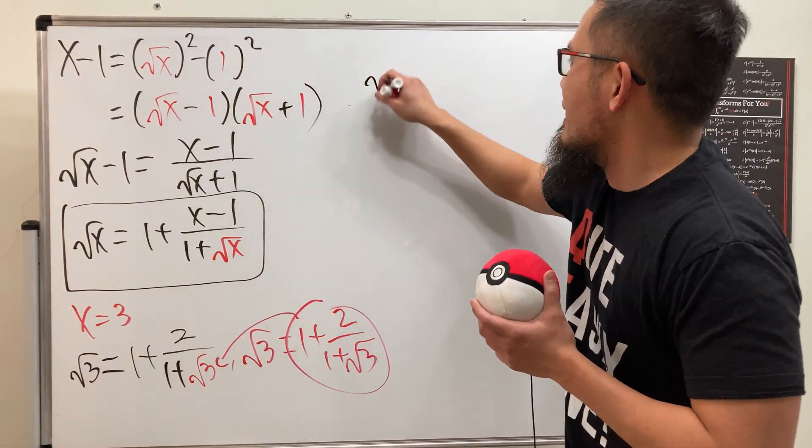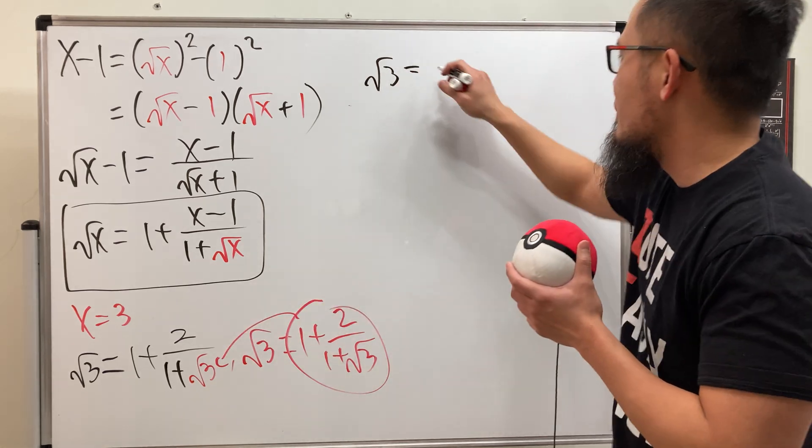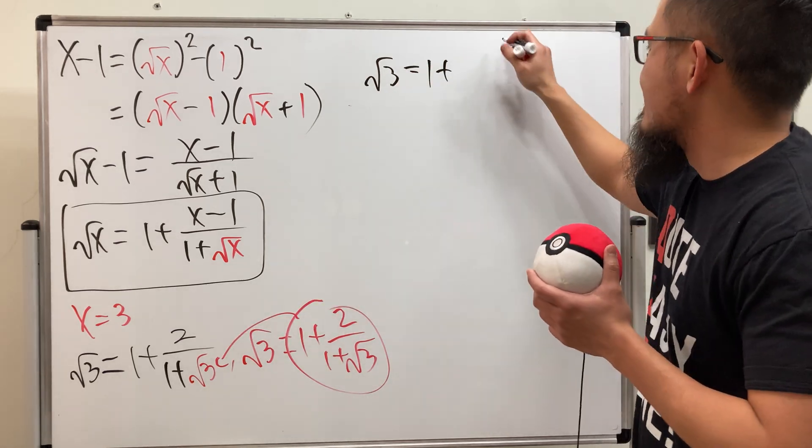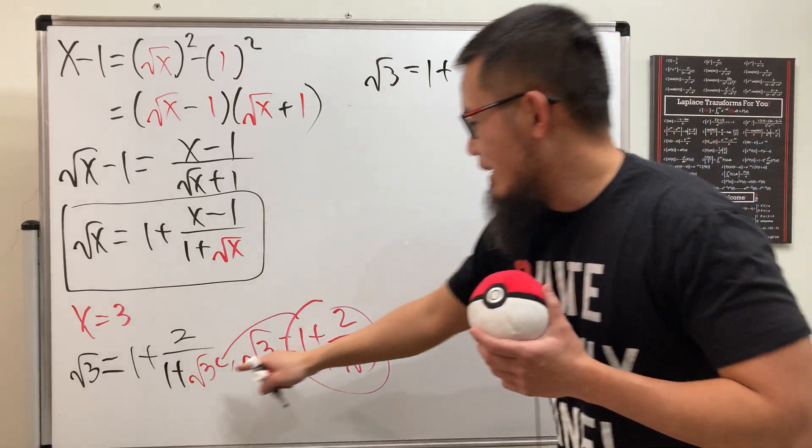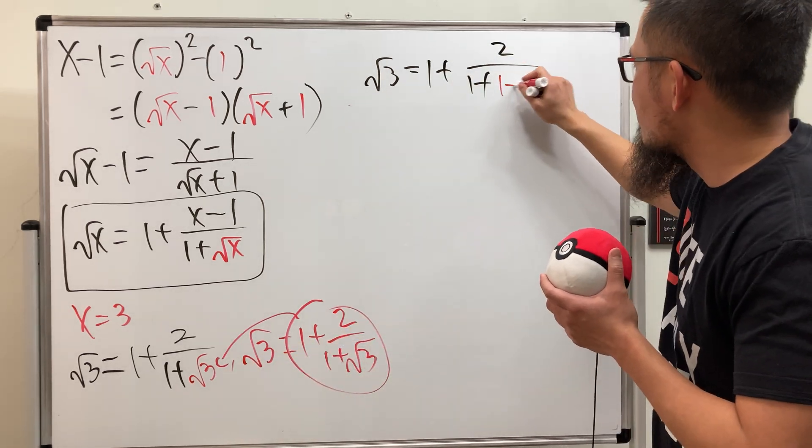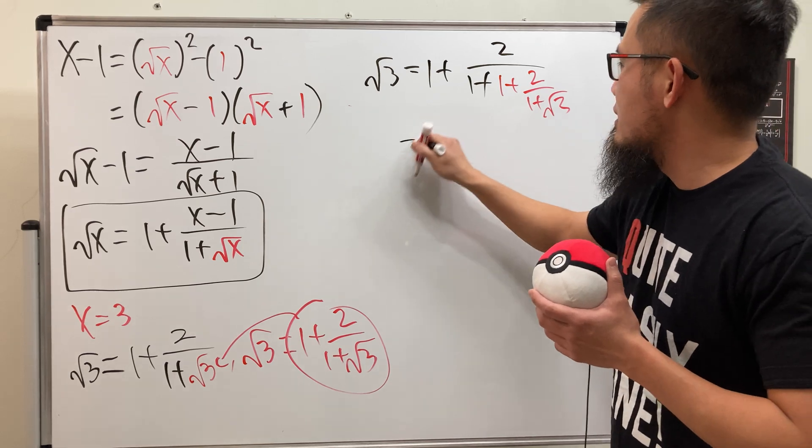So ladies and gentlemen, right here, have a look. Square root of 3 is equal to, on the top of the deal, we have 1 over, 1 plus 2 over 1 plus. And we have this, which is just that, which is just 1 plus 2 over 1 plus square root of 3. So now you see,